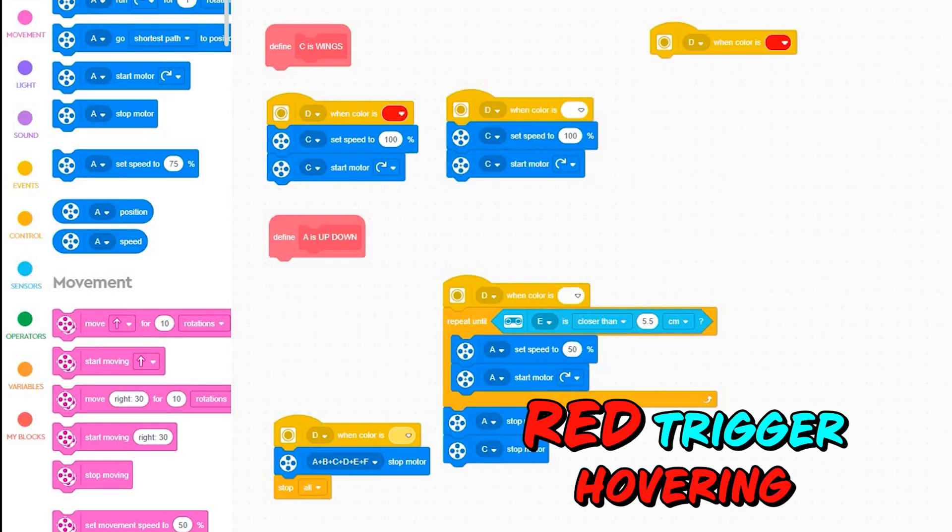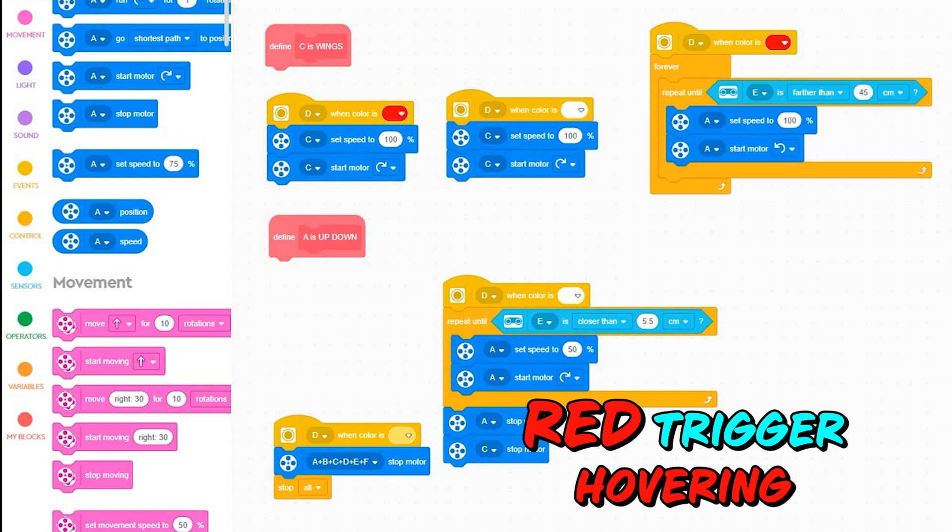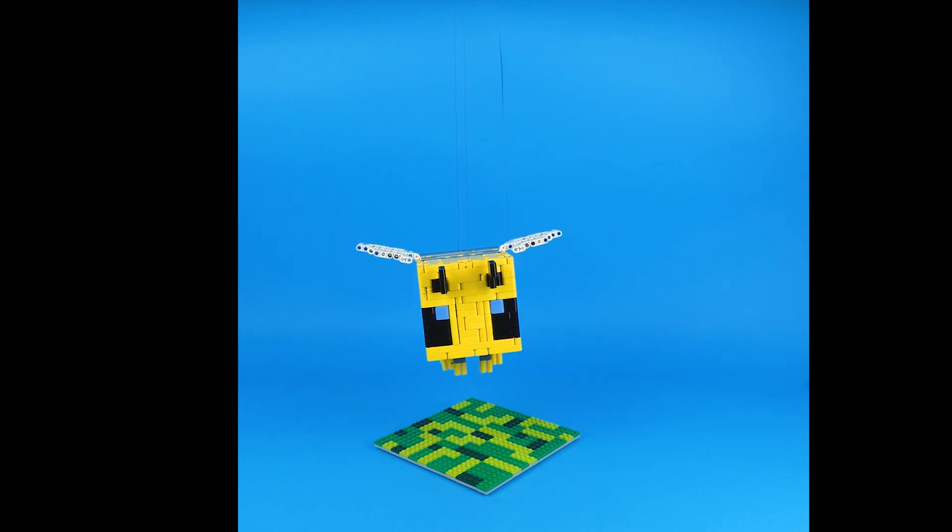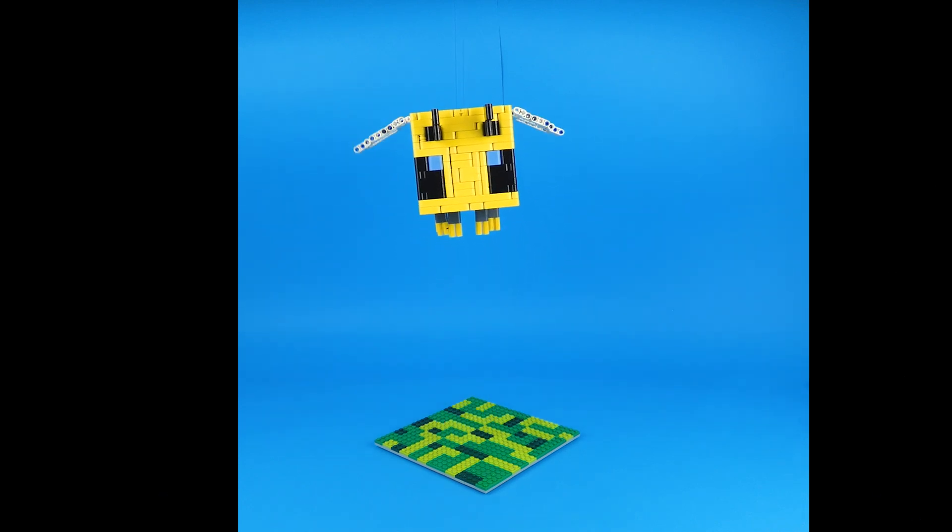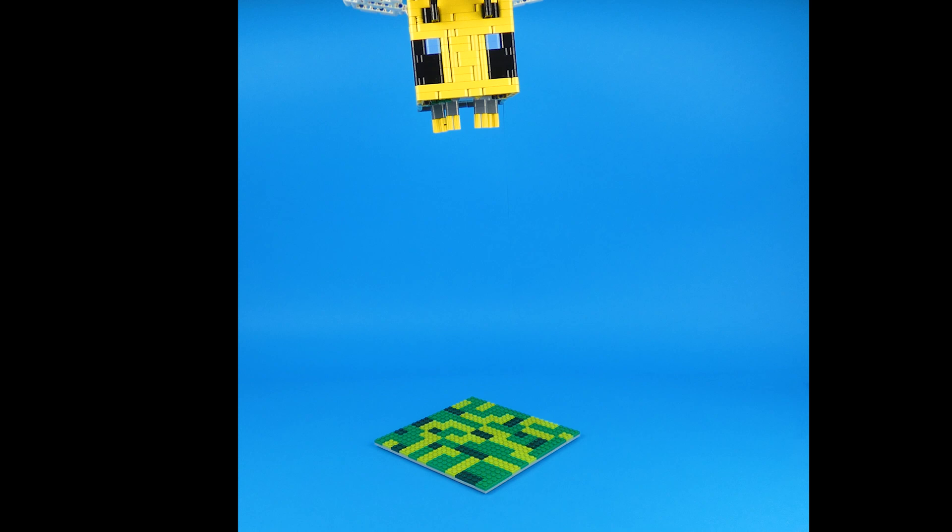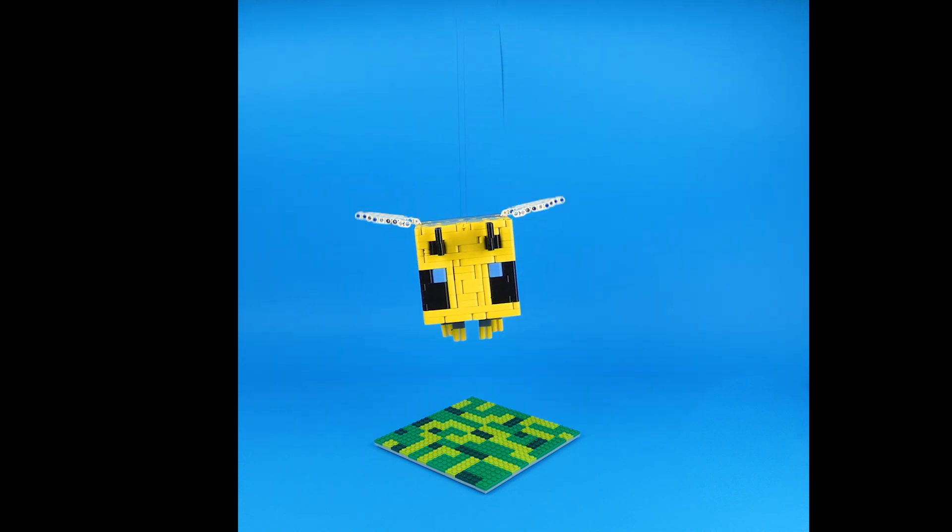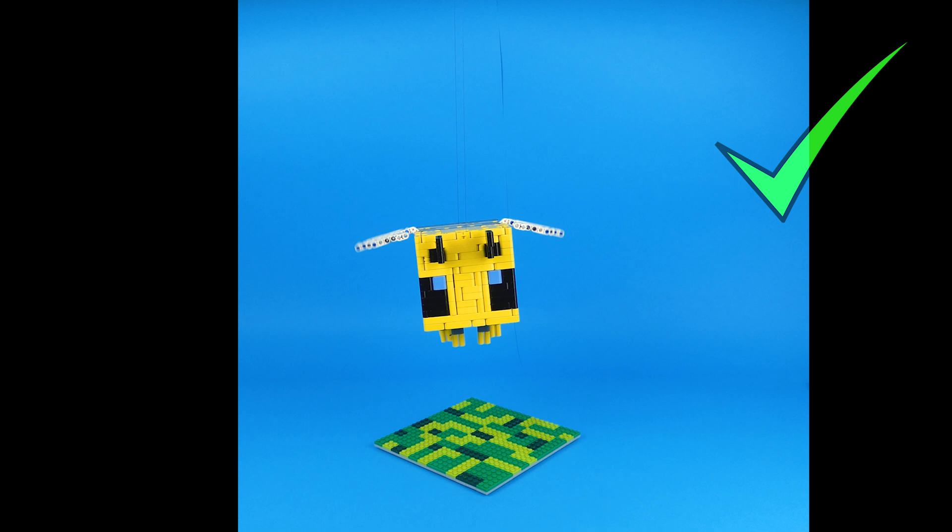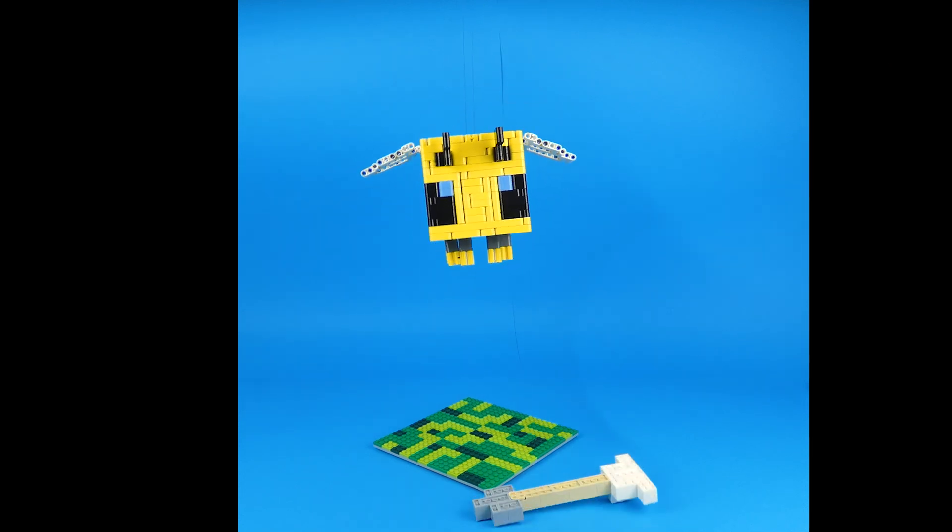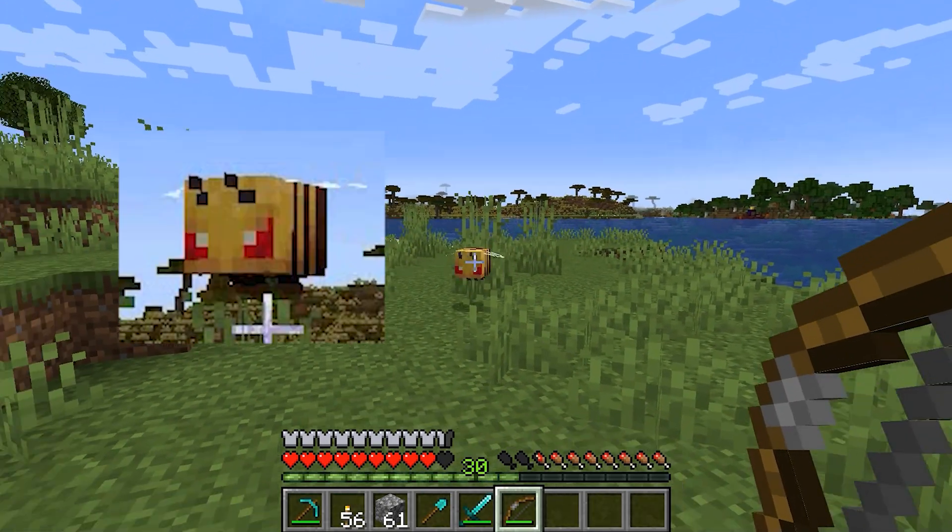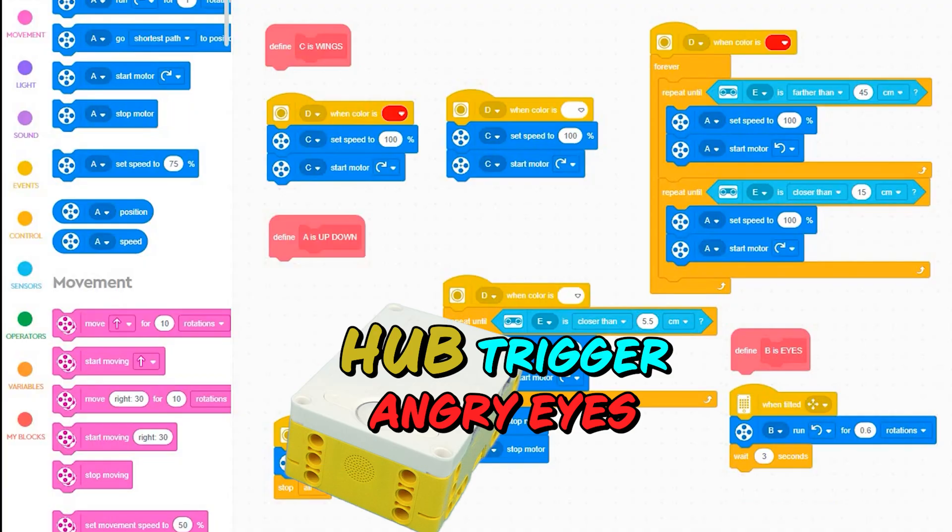When red, it shouldn't just fly up, it should hover up and down based on distance. I think reaction in Minecraft is different. When hub is tilted, it should change to angry eyes.